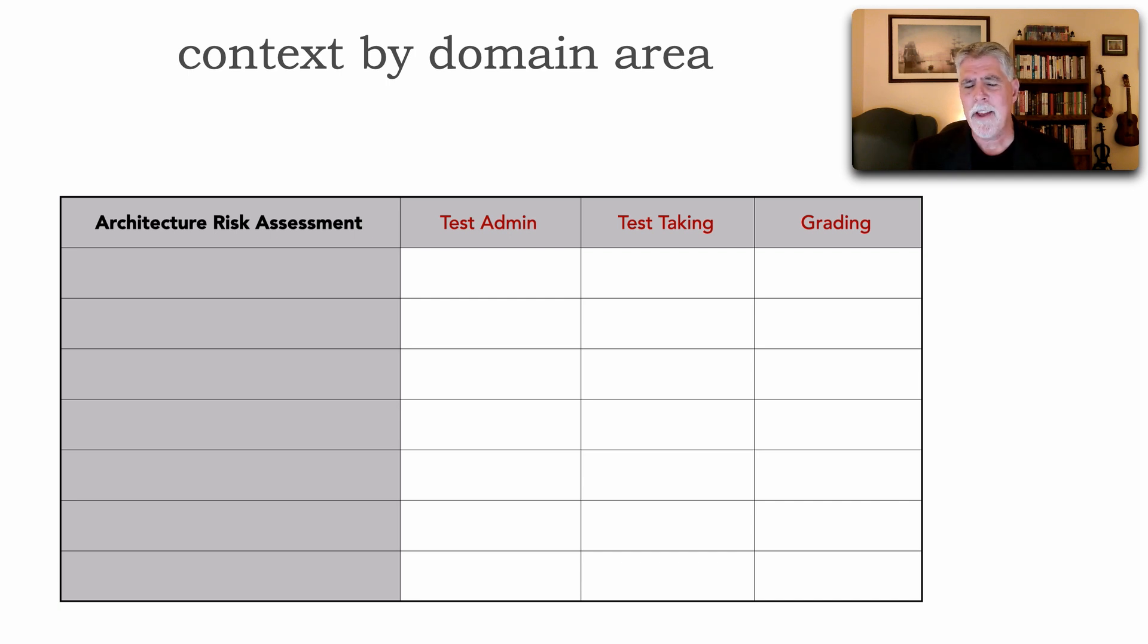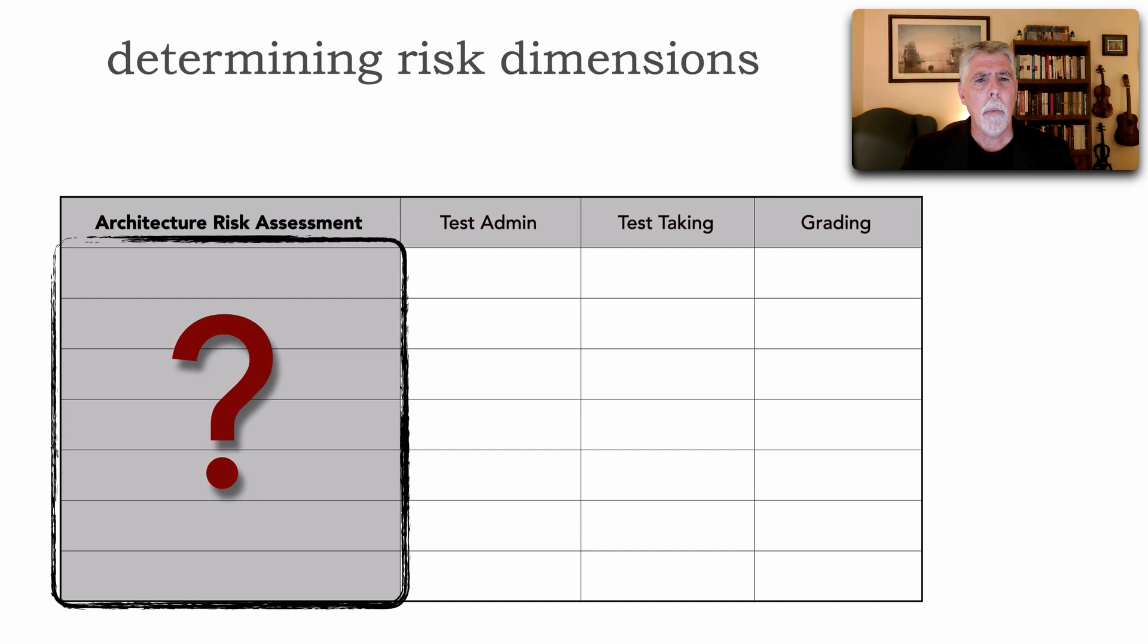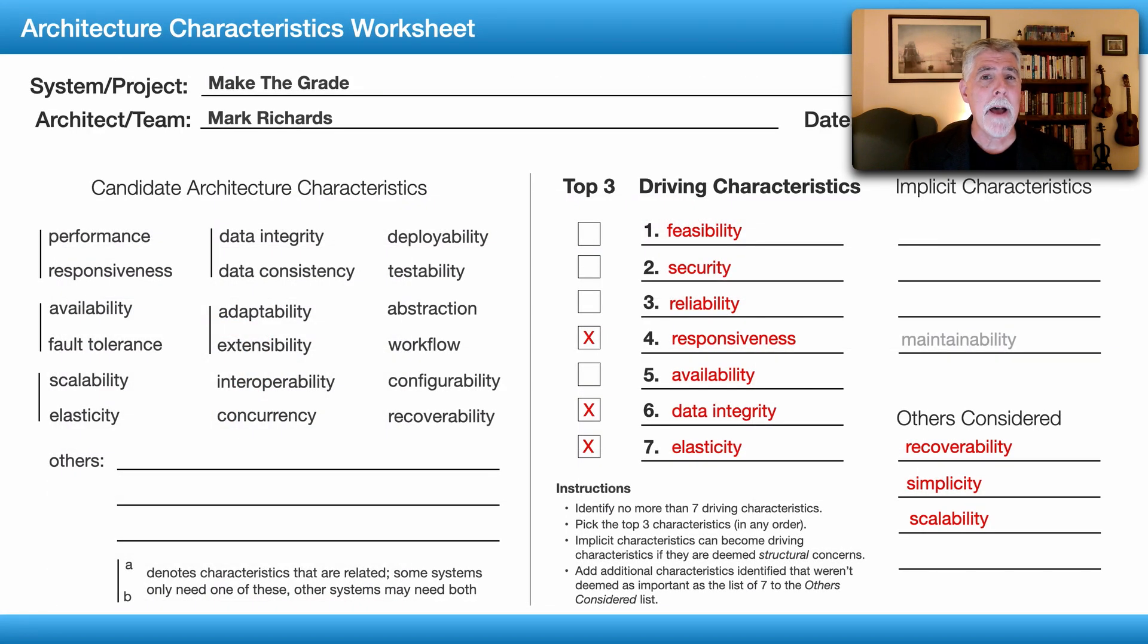But then we ask, and I'm going to stick with the domain areas here—test admin, test taking, and grading—what am I associating that risk with? What's my criteria that I'm basing risk on? How do we determine that? There's a lot of ways in which we can have different kinds of criteria. It might be operational criteria. It might be based on functionality risk. But architecturally, one of the things I like to do with my risk assessments is rate that risk by my architecture characteristics.